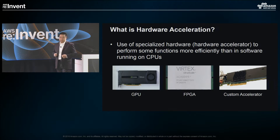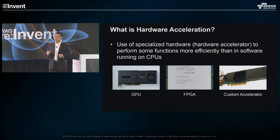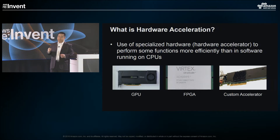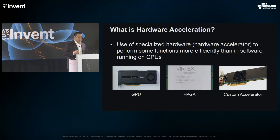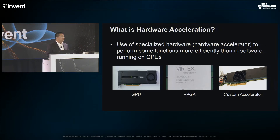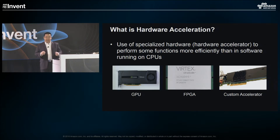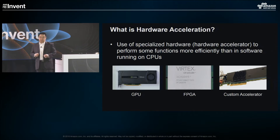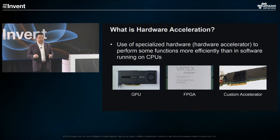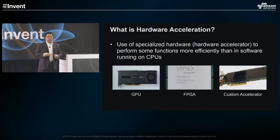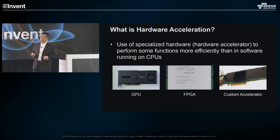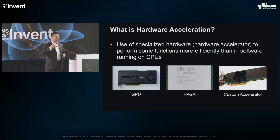Hardware acceleration is the use of specialized hardware — we call them hardware accelerators — to perform some functions more efficiently than software running on CPUs. Hardware acceleration is not a new concept. In the 1980s, Intel introduced the Intel 8087, a floating-point co-processor for the 8086 CPU line. Nowadays, there are many more hardware accelerators available: GPUs for rendering graphics, hardware accelerators to encrypt network traffic, speed up file compression, or even accelerate Bitcoin mining. Although these jobs can be done in software, hardware accelerators can do them much faster and more efficiently.